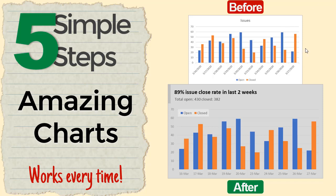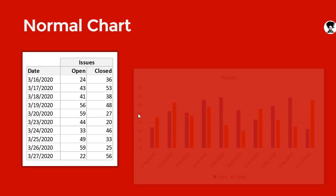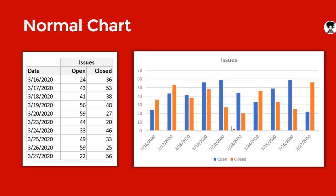I'm going to use a very simple example of some fictional data. Let's say you are in an IT project testing team and you are looking at some issues that have been opened and closed in the past two weeks. We have some dates and number of issues that are open and number of issues that are closed. If you select this and create a default Excel bar chart or column chart, this is what you would get.